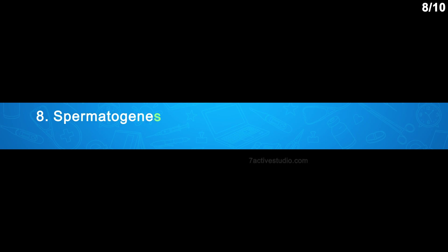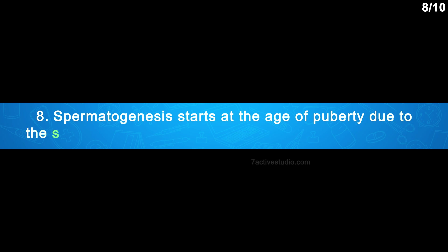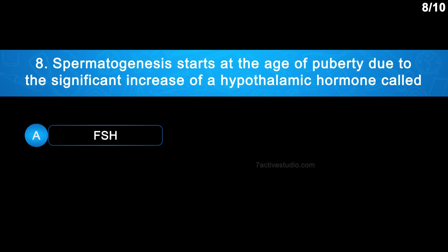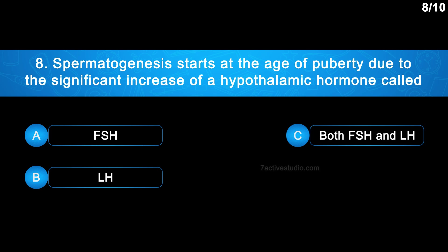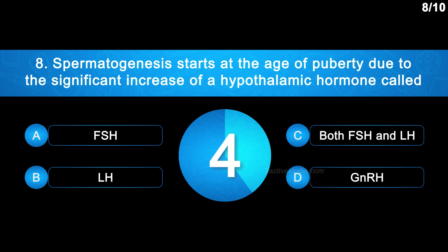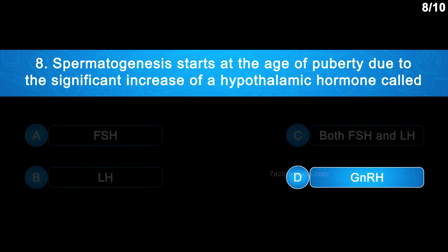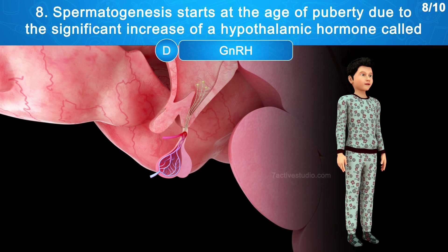Question 8: Spermatogenesis starts at the age of puberty due to the significant increase of a hypothalamic hormone called — Option A: FSH. Option B: LH. Option C: Both FSH and LH. Option D: GnRH. The correct answer is Option D — GnRH. When a child reaches puberty, the hypothalamus releases gonadotropin-releasing hormone, which works on the anterior pituitary gland and induces the release of two gonadotropins: FSH and LH.